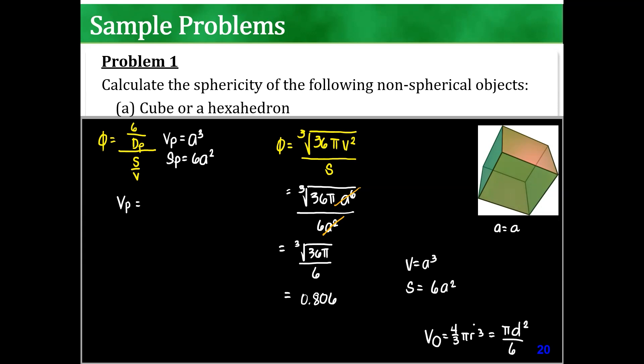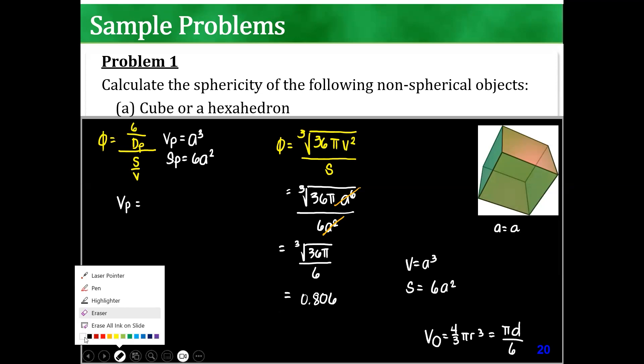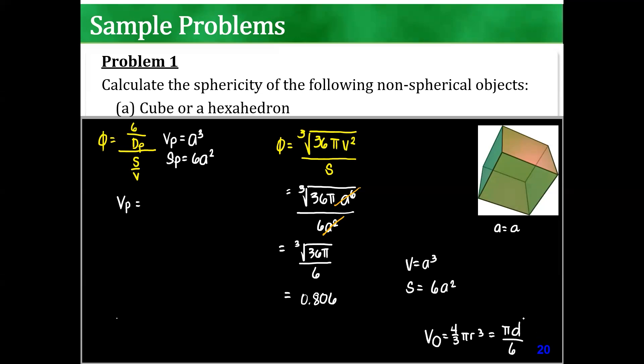Because r becomes d over 2. When you square that, it becomes d cubed. So, sorry. Pi d cubed over 8. Right? Pi d cubed over 8. But then there's a 4. So it could cancel out. So that's pi d cubed over 8.